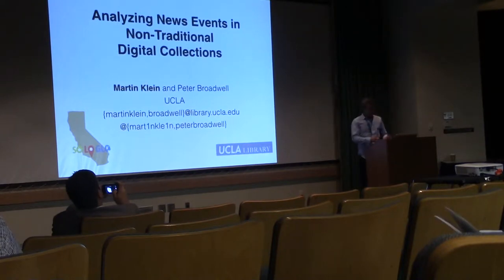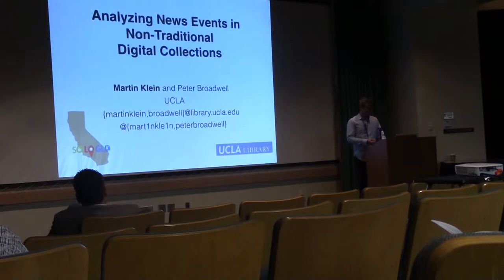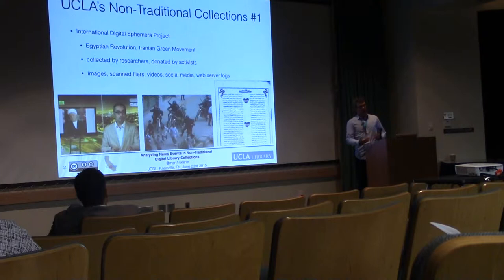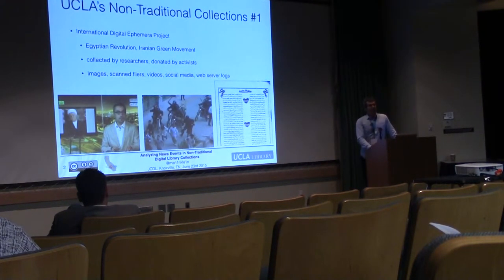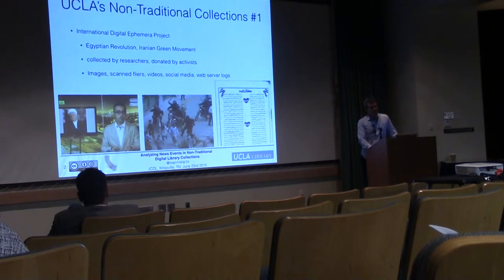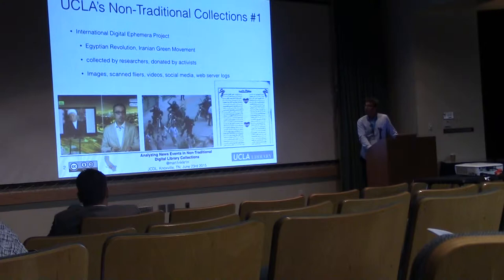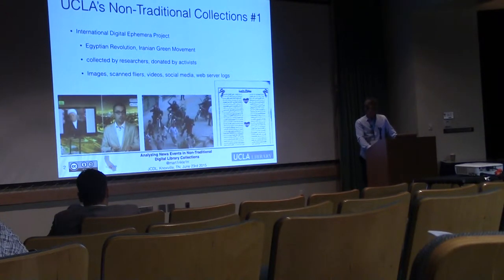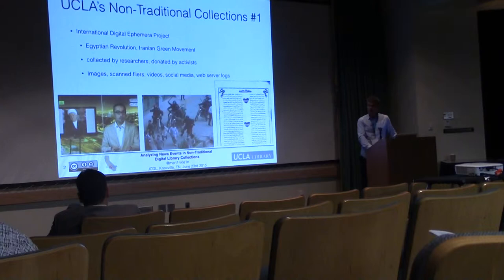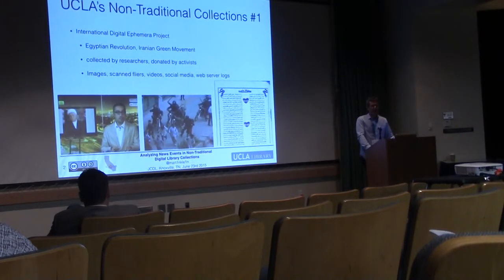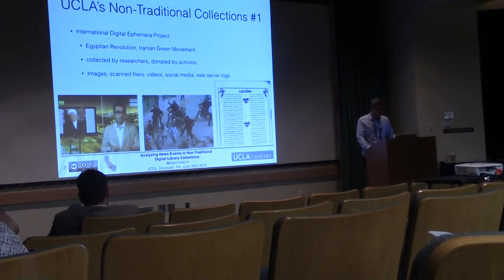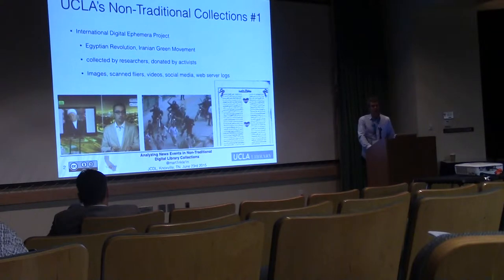We're both part of the digital library program at UCLA. So to put this into perspective, I need to give you background about what we're doing. We're collecting non-traditional news events. Part of that is the International Digitizing Ephemera Project, under which we've been gifted collections from activists on the ground, for example in 2009 at Tahrir Square during the Egyptian Revolution. We received material from the Green Movement in Iran in 2011.